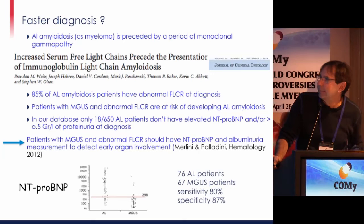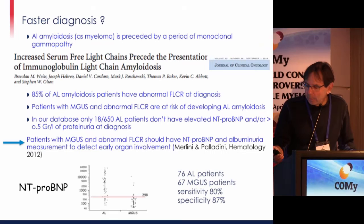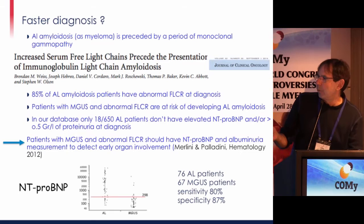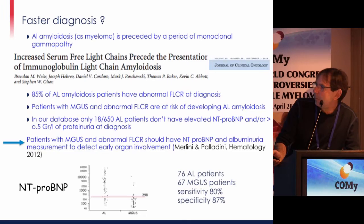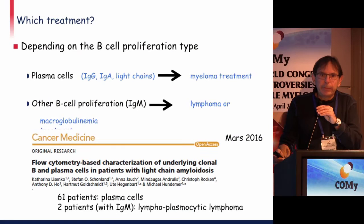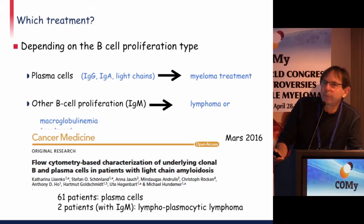As proposed by Giampaolo Merlini and Giovanni Palladini, patients with MGUS and an abnormal free light chain ratio should have NT-proBNP and albuminuria measured to detect early organ involvement. We measured NT-proBNP in 76 AL patients at diagnosis and 67 MGUS patients, and it is clearly much more elevated in AL amyloidosis patients. With a threshold around 300 nanograms per liter, the sensitivity is 80 percent and specificity 87 percent to diagnose amyloidosis.